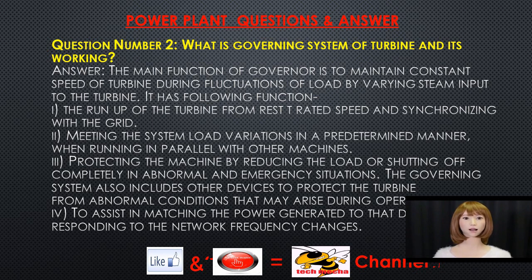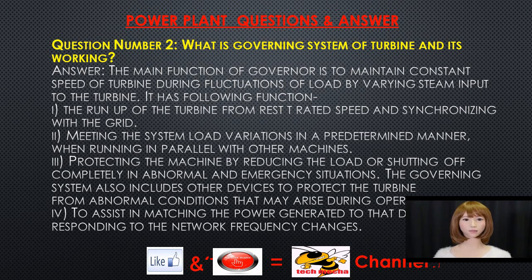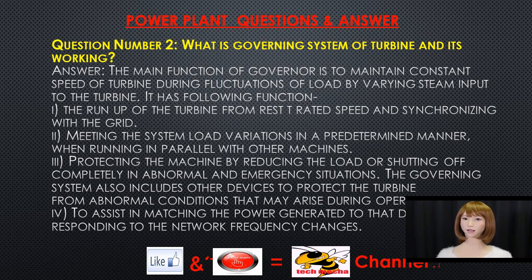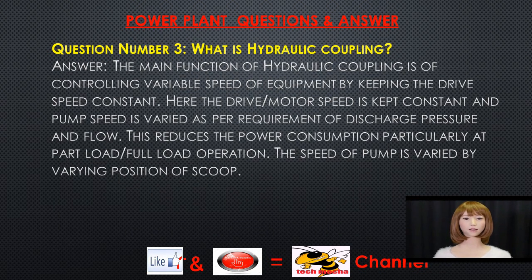Question number two: what is the governing system of a turbine and its working? The main function of a governor is to maintain constant speed of the turbine during load fluctuations by varying steam input. Its functions include: running up the turbine from rest to rated speed and synchronizing with the grid; meeting system load variations when running in parallel with other machines; and protecting the machine by reducing load or shutting off completely in abnormal or emergency situations. The governing system also assists in matching generated power to network demand by responding to frequency changes.